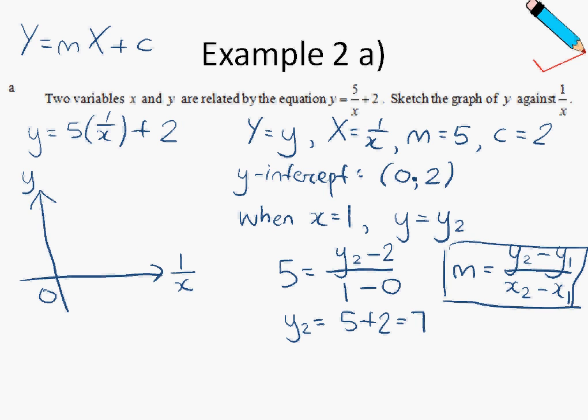So one point on this line is 0, 2. So 0, 2 is somewhere over here. The other point would be over here. When x is equals to 1, y is equals to y2, which is 7. So when x is 1, y is 7, somewhere here. So I just draw a straight line through, and that's the sketch that we're looking for. That's the sketch that we want.